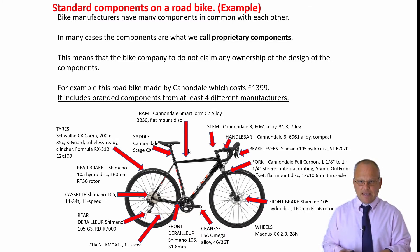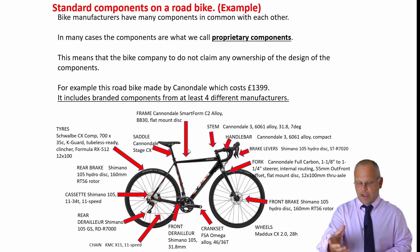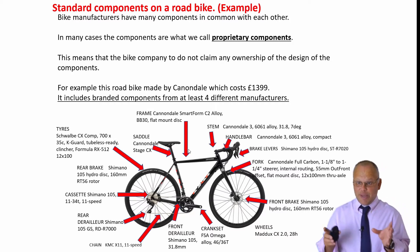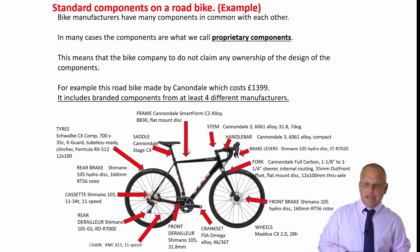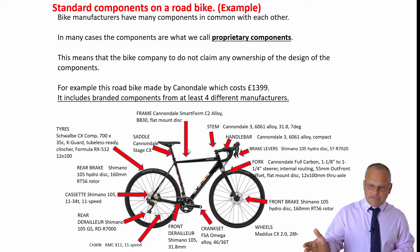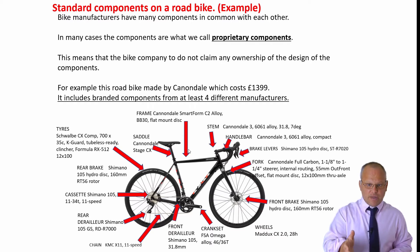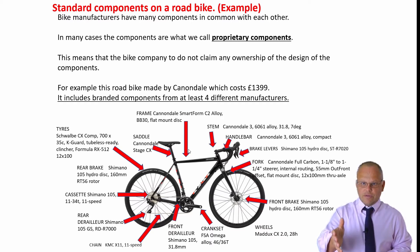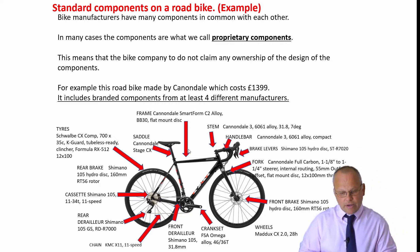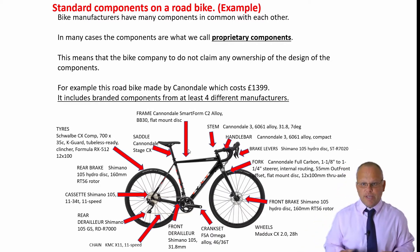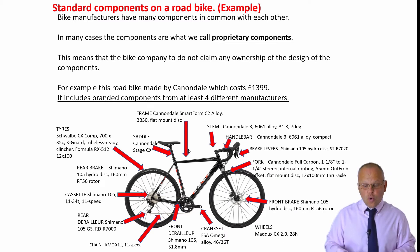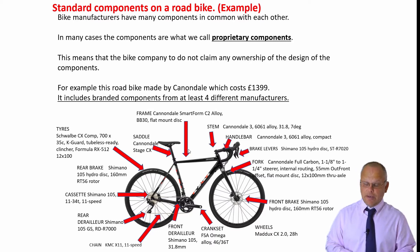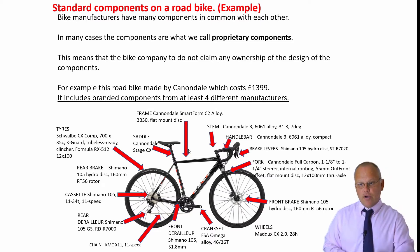Cannondale mostly make the frame, the fork, and the saddle. They've got Omega, Shimano, Schwab, and Maddox for the wheels — a number of different companies contributing to the overall assembly. At least four different manufacturers are involved. Proprietary components are a standard component or standard assembly, but they are owned by another company.